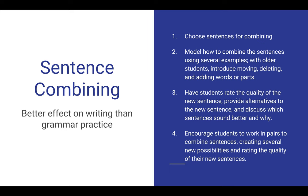Step three asks you to have students rate the quality of the new sentence and provide alternatives — combining it in a new or different way while sharing the same information. Then have that very important discussion about which sentences sound better and why. Step four encourages students to work in pairs and create several new possibilities, then rate the quality of their new sentences.